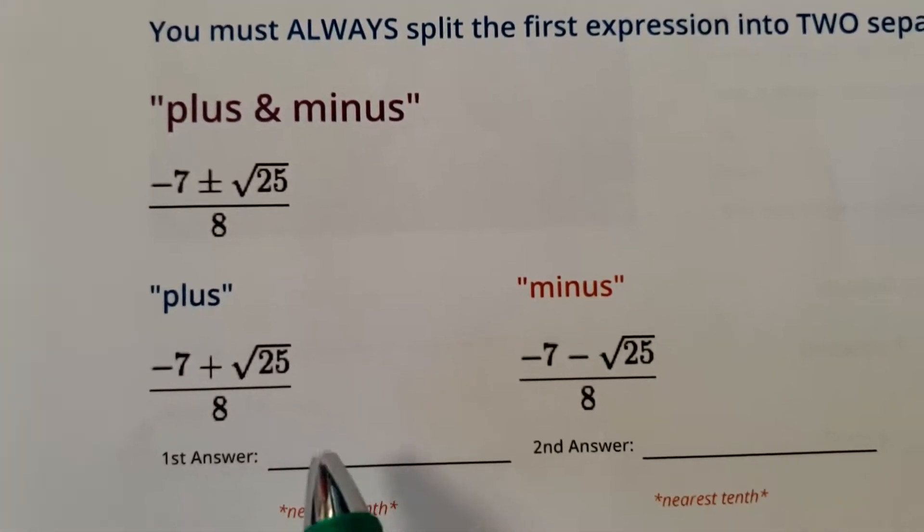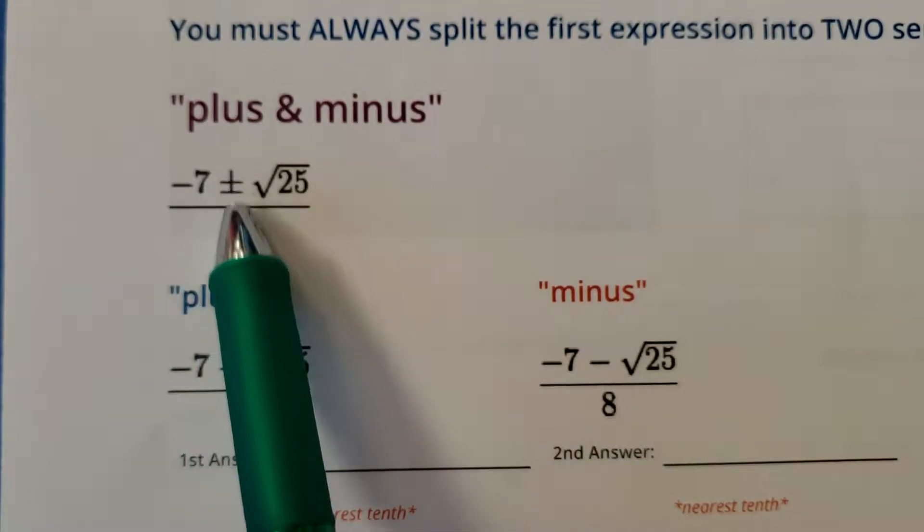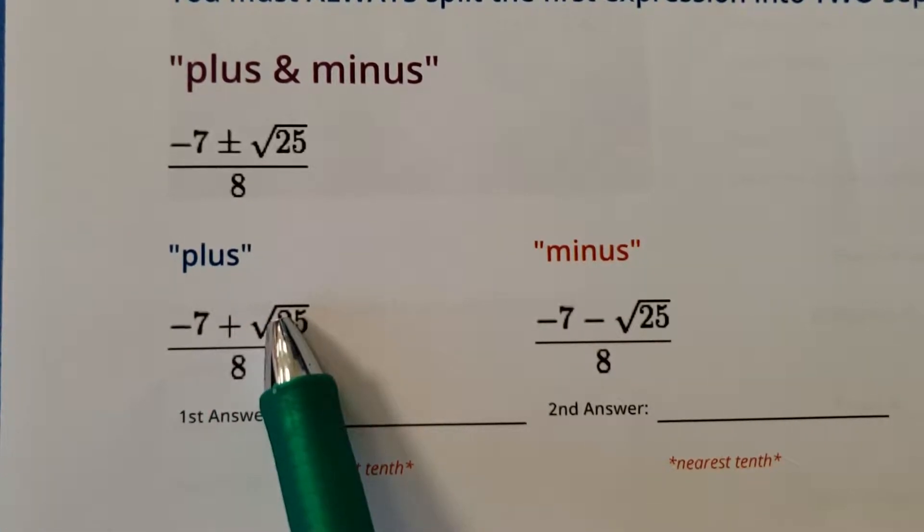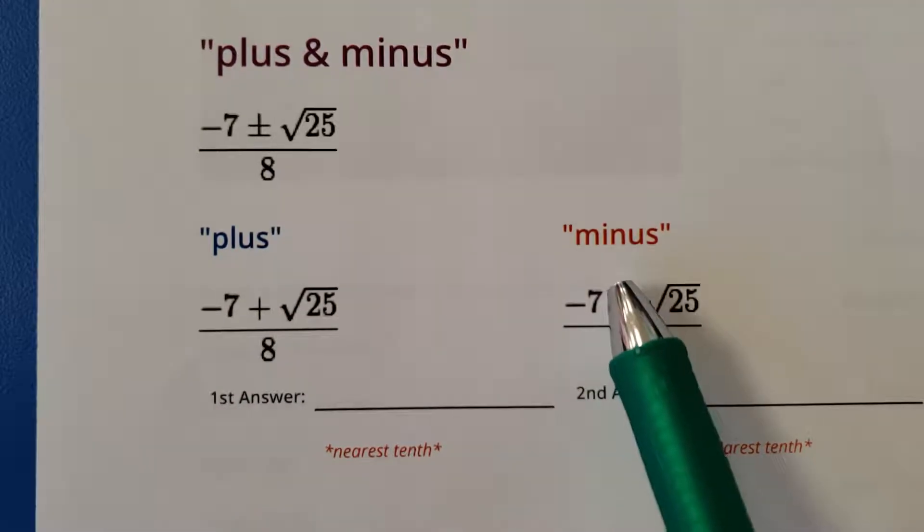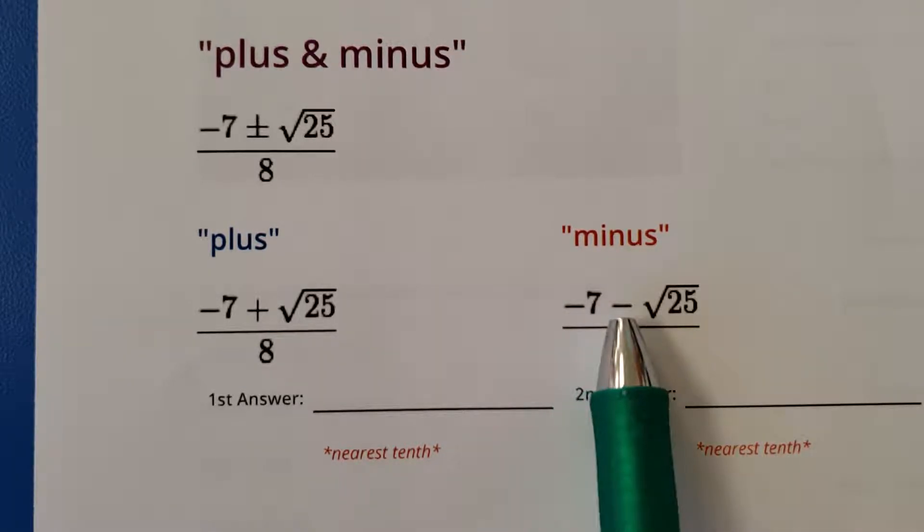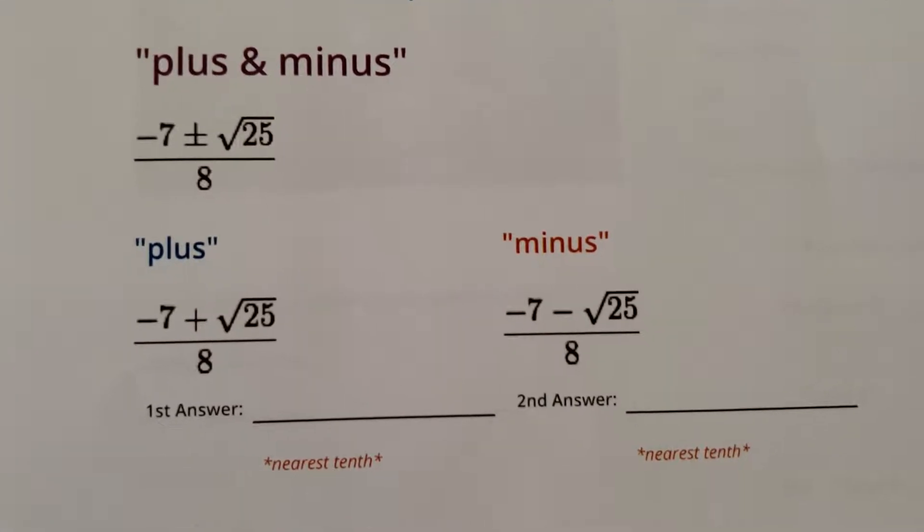Okay, I think we get it. Oh wow, they're really mapping it out for you here. Negative 7 plus and minus the square root of 25 over 8 is actually negative 7 plus the square root of 25 divided by 8. And then another separate, completely separate, negative 7 minus the square root of 25 divided by 8.